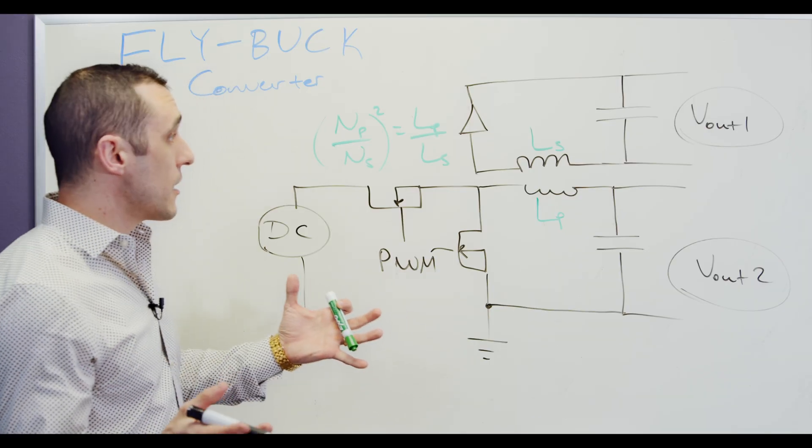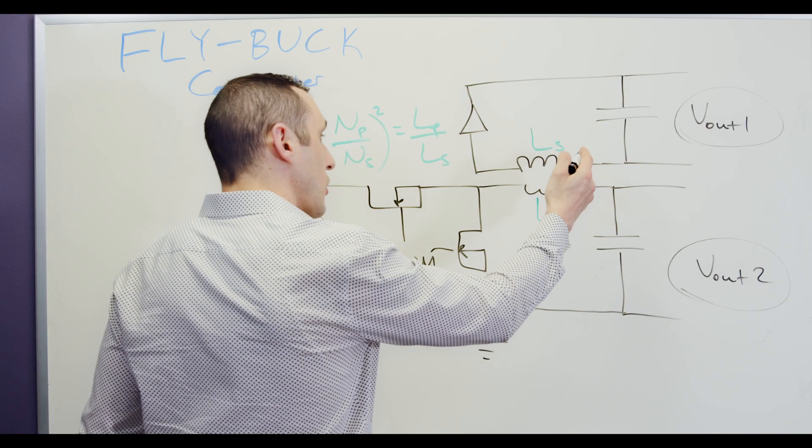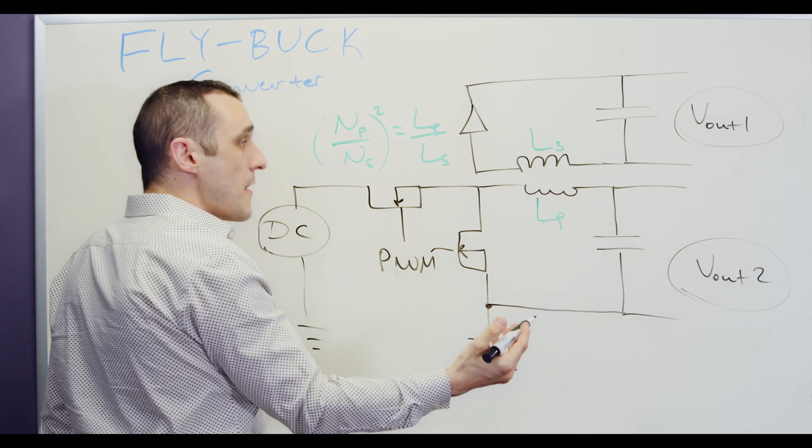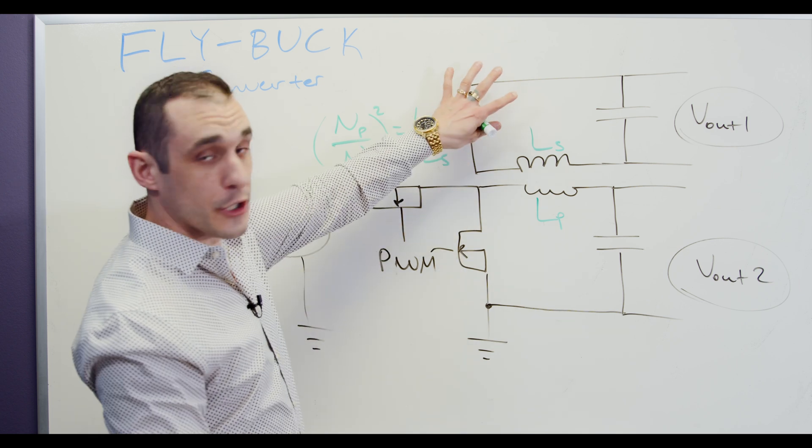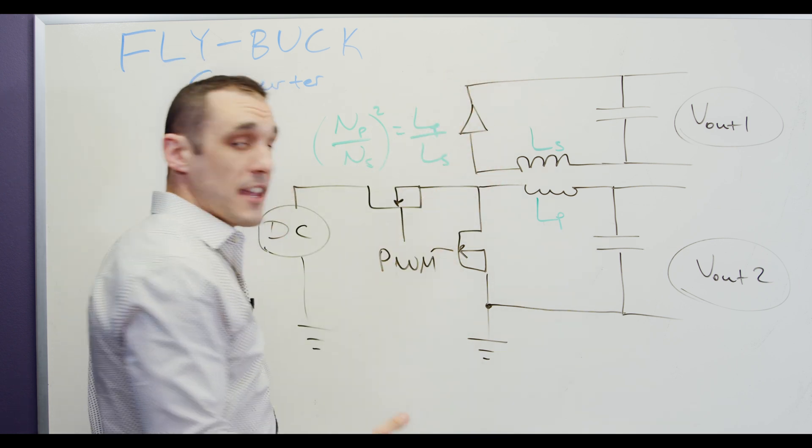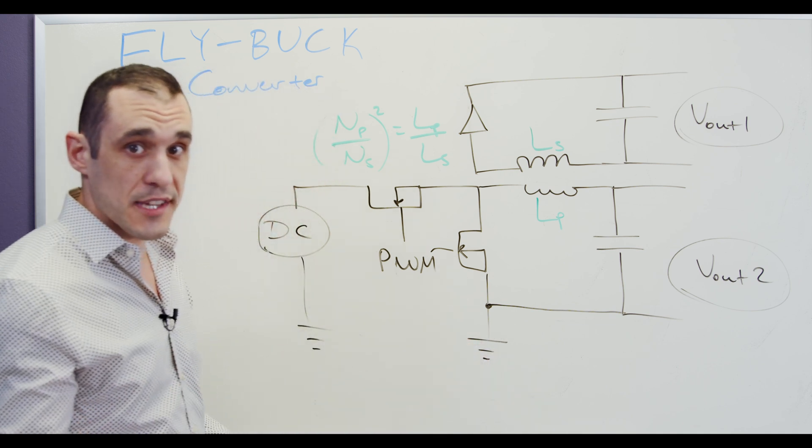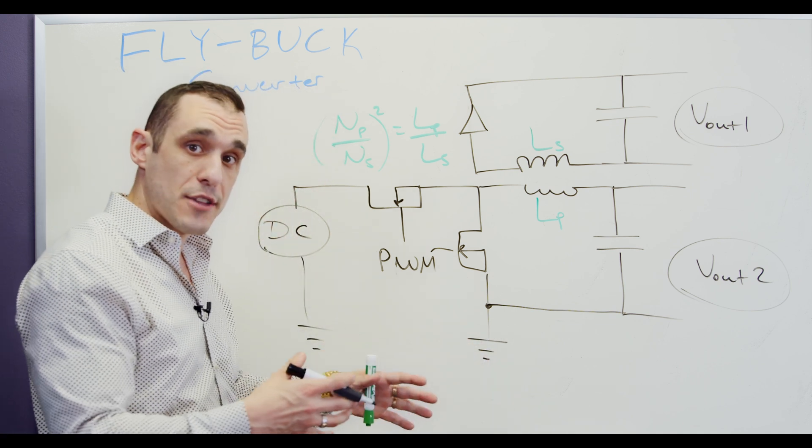So you might be wondering, could I have another coil that is coupled to LP in a transformer that then creates a third rail in this topology? And the answer is yes, you could. You could technically have as many rails as you can possibly fit onto that transformer.